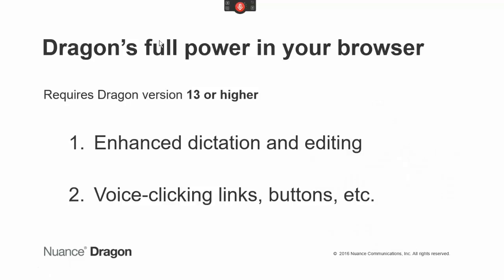If you have Dragon version 13 or higher, adding the Dragon Web extension gives you Dragon's full functionality in Chrome. After enabling the extension, you'll be able to dictate text and edit it by voice, and also use your voice to click links and other objects on web pages.